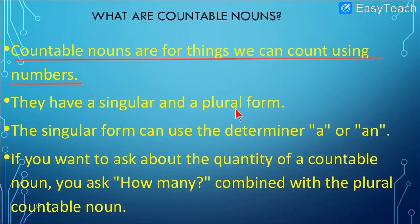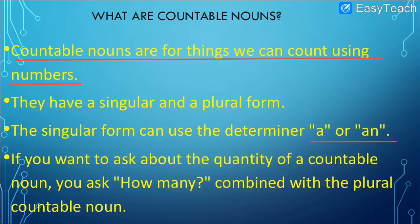Countable nouns have both singular and plural forms. Singular means only one; plural means more than one. The singular form can use the determiner 'a' or 'an' — for example, 'I have a pencil' or 'I have an eraser' (eraser starts with a vowel so we use 'an'). We use a or an only when there is one single countable noun.